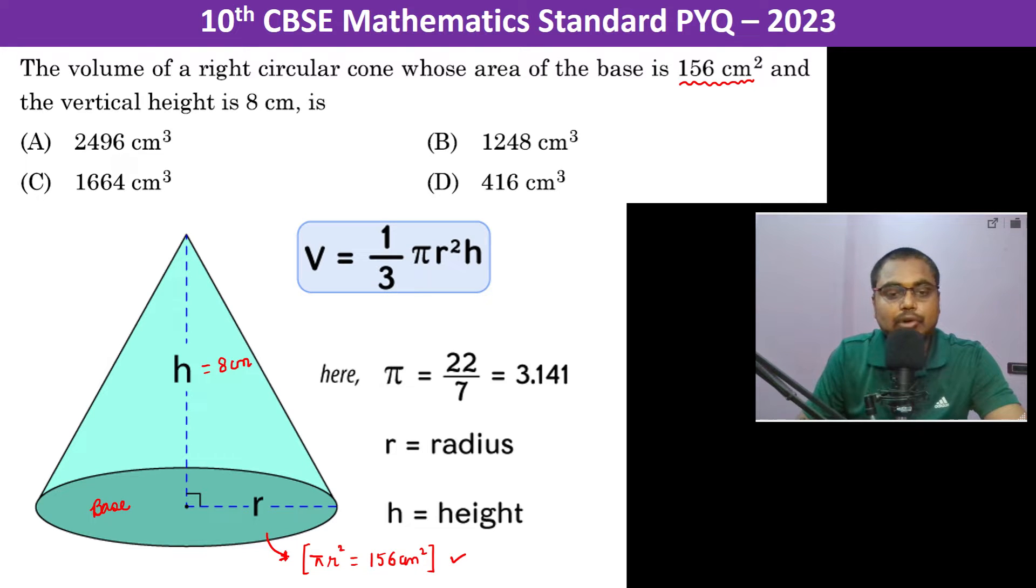Now we have to find the volume, so the formula of the volume is one by three into pi r square into h. The pi r square, which is the area of the base, which is 156 centimeters square.